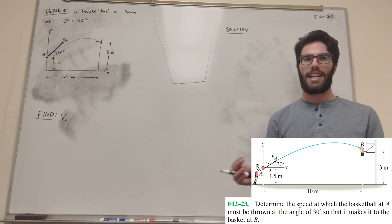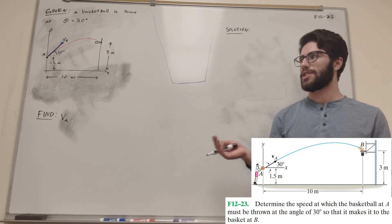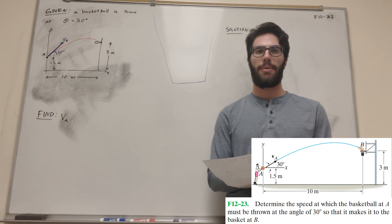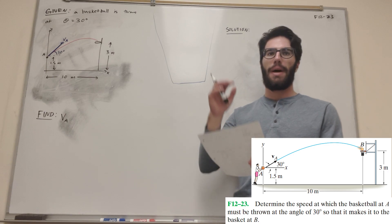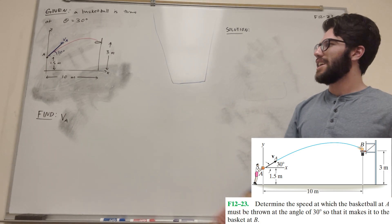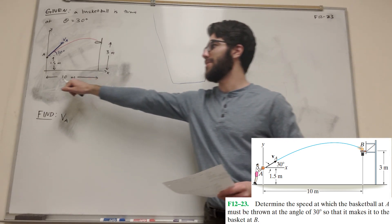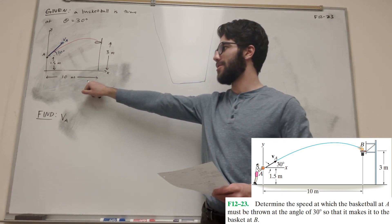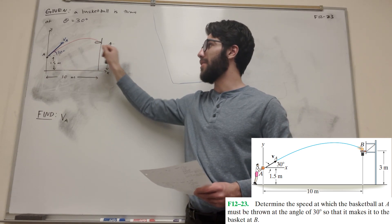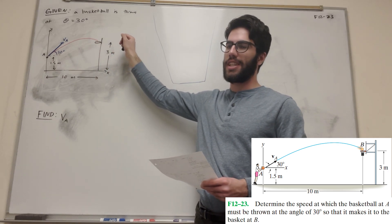What's up, Cal Game? Welcome back to Dynamics. So let's solve this problem. We're given that we need to throw a basketball at 30 degrees, and it needs to go 10 meters horizontally and up 1.5 meters vertically.